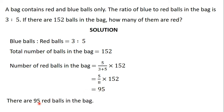So, there are a total of 95 red balls in the bag. To find the number of blue balls, it is going to be the part of the ratio that belongs to blue balls, which is 3, divided by the total ratio of 3 plus 5, times 152. Or, since the bag contains only red and blue balls and we have found that the number of red balls is 95, we can simply subtract 95 from 152 to get the number of blue balls.